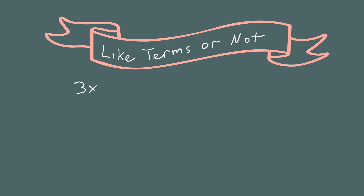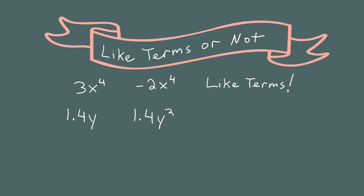For practice, let's play "like terms or not." I'll show you two terms at a time, and you have to decide if they are like terms or not. 3x to the 4th and negative 2x to the 4th — like terms! The variables and their exponents are the same. 1.4y and 1.4y squared — don't let the numbers fool you. These are not like terms. The variables are the same, but their exponents are different.